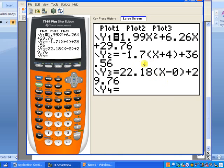if you look in y2, there's the slope, negative 1.7, and then I use the point negative 4, 36.56, the initial point from the table.